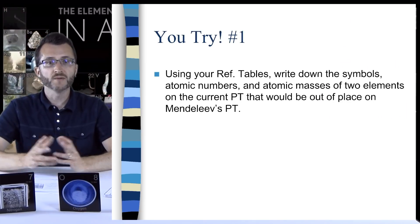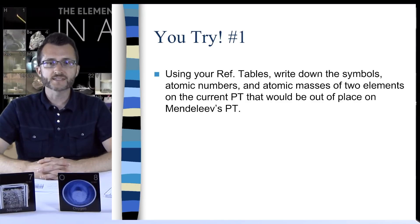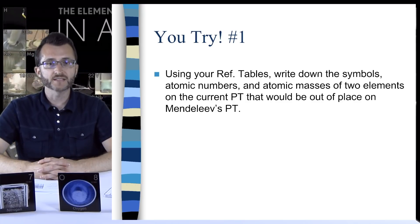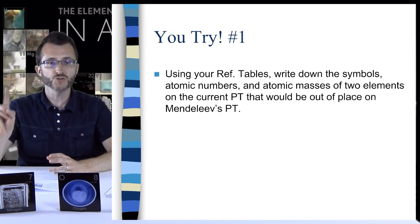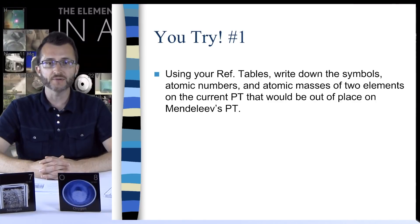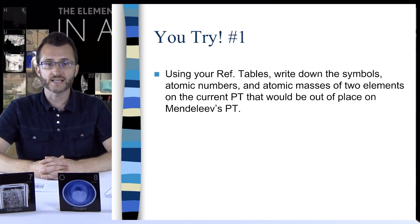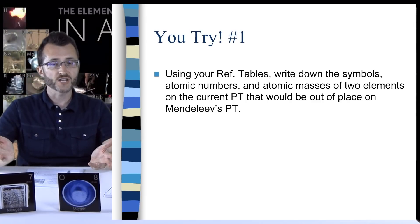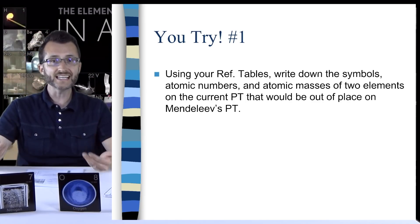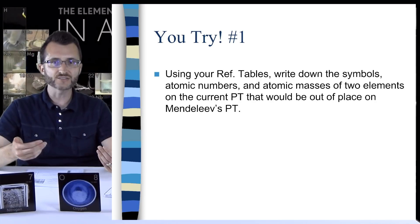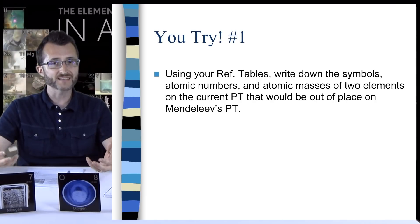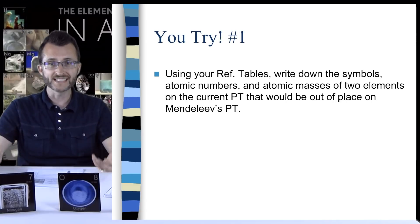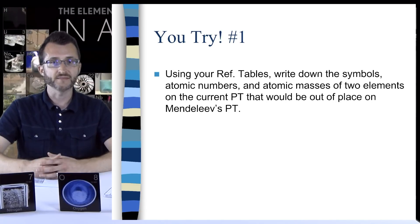You try number one. Using your reference tables, write down the symbols, atomic numbers, and atomic masses of two elements on the current periodic table that would be out of place on Mendeleev's periodic table. So what you're looking for are two elements next to each other where the atomic number is increasing, but the atomic mass is decreasing. There are a number of different possibilities for your answers, so they will not necessarily all be the same.